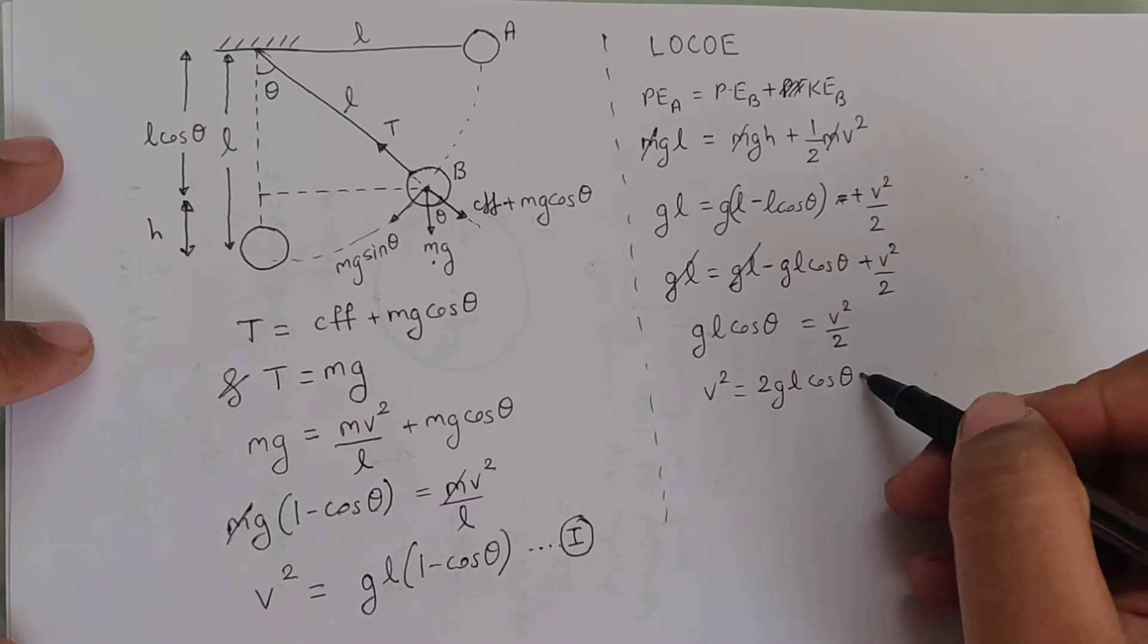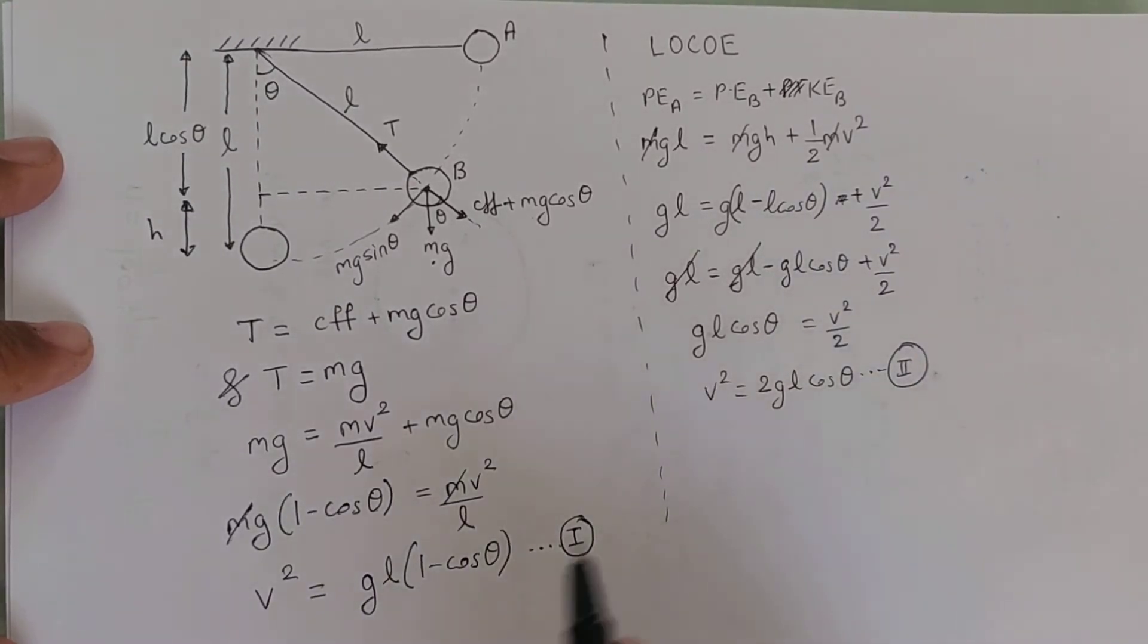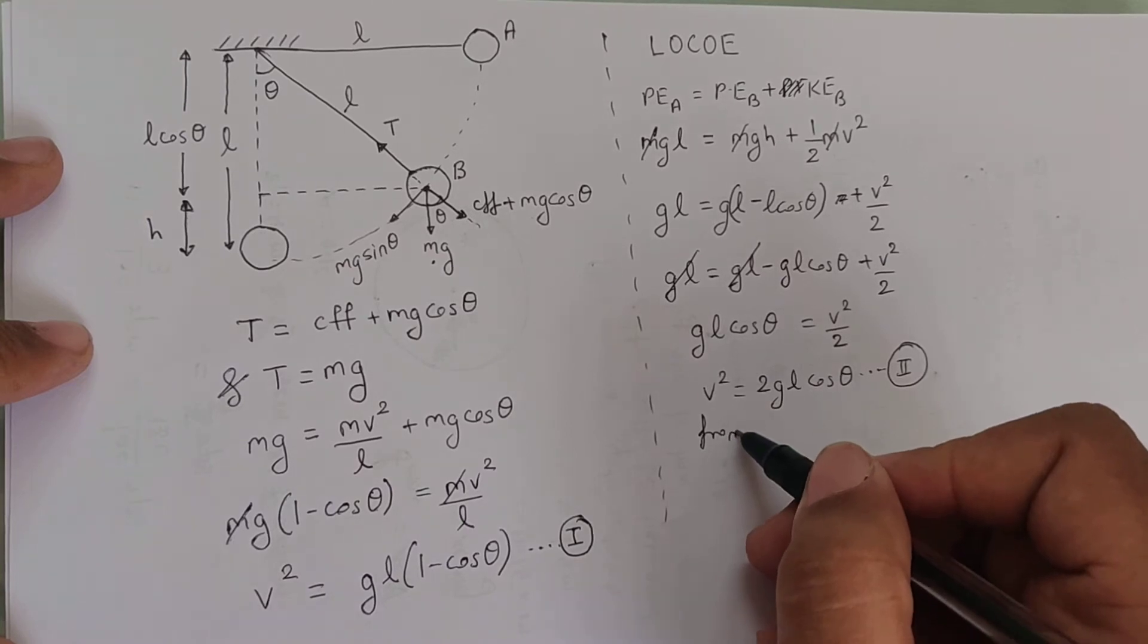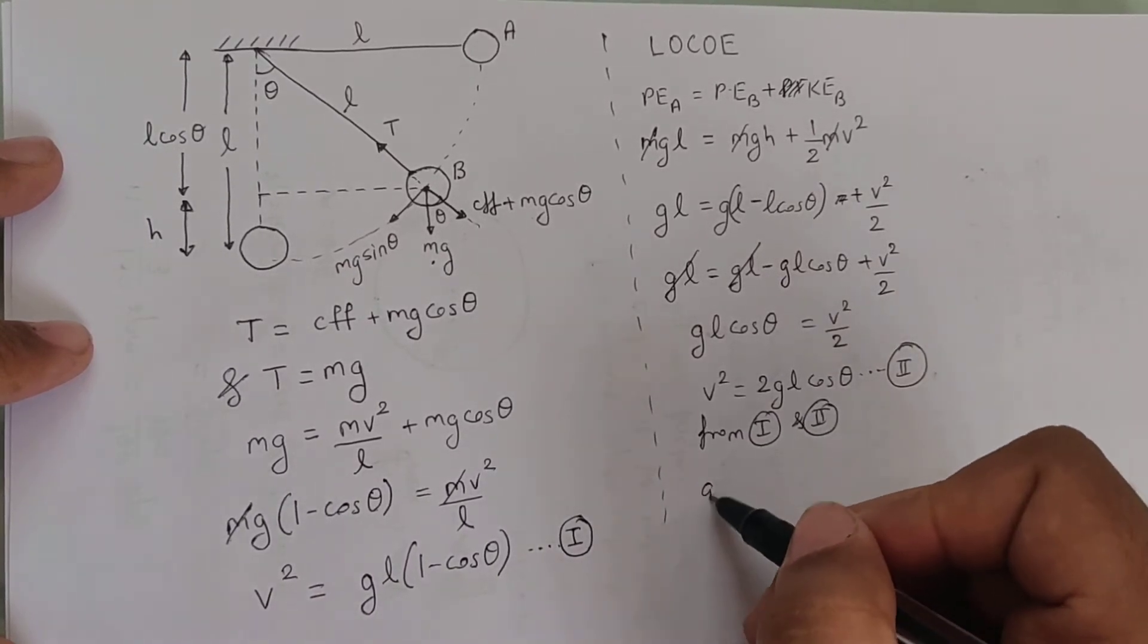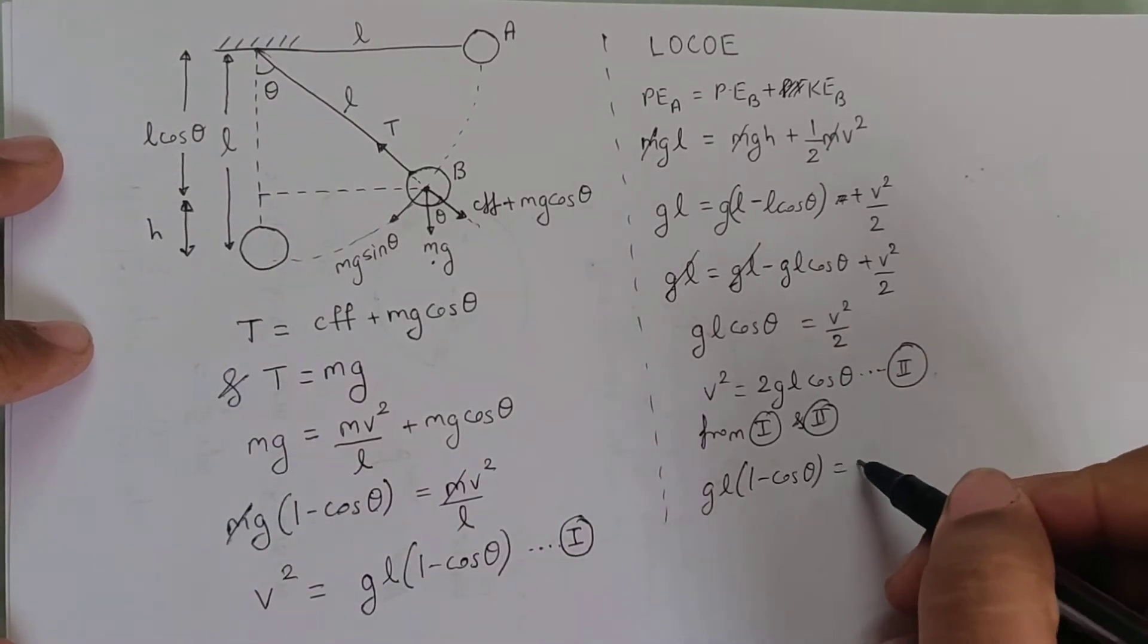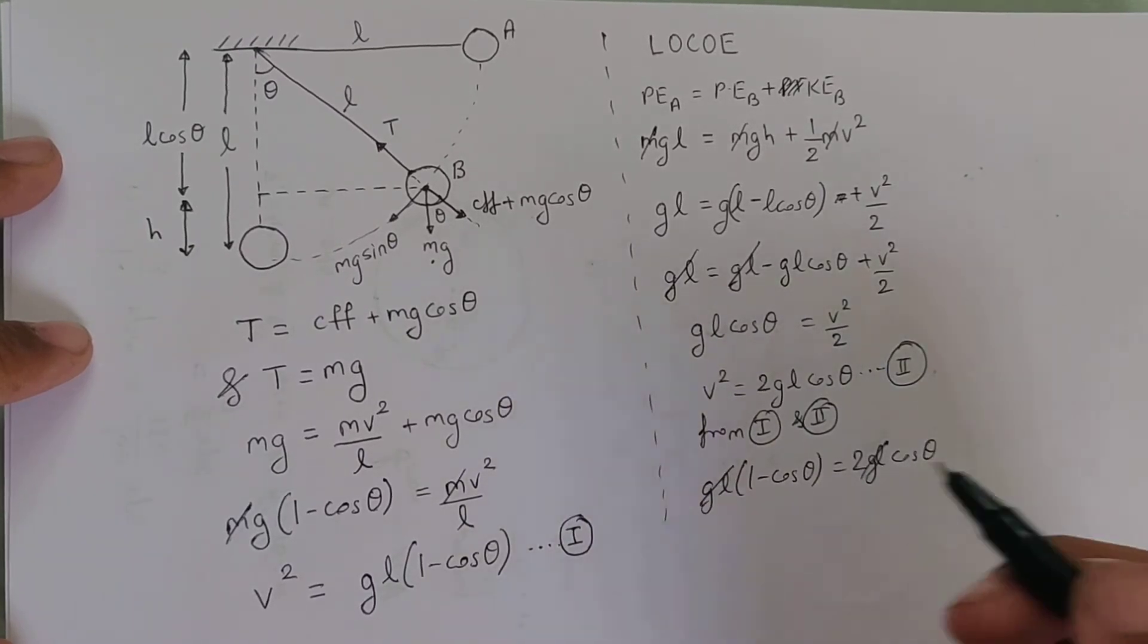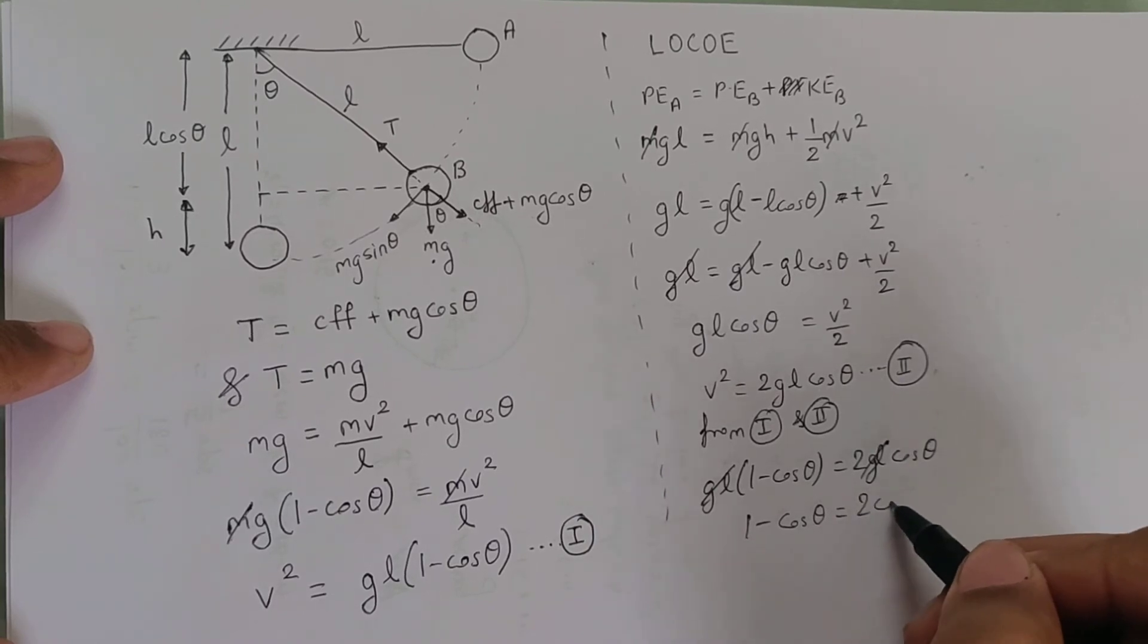I can consider this as equation 2. As you can see both the equations, the left hand side is same. So I can equate the right hand side, which gives me from 1 and 2: gL bracket 1 minus cos theta equals 2gL bracket cos theta. The gL gets cancelled. Now 1 minus cos theta is 2 cos theta.